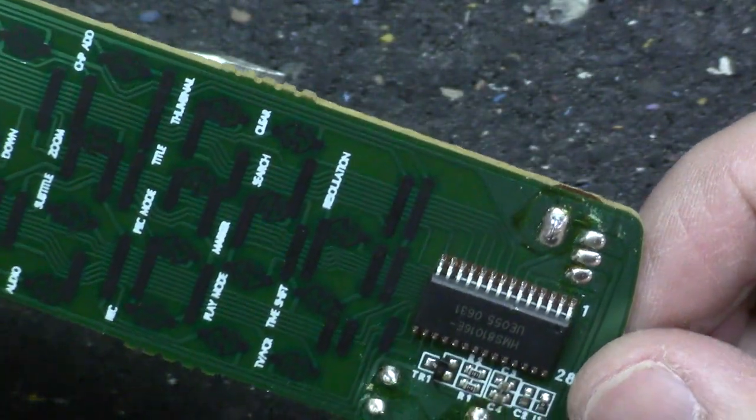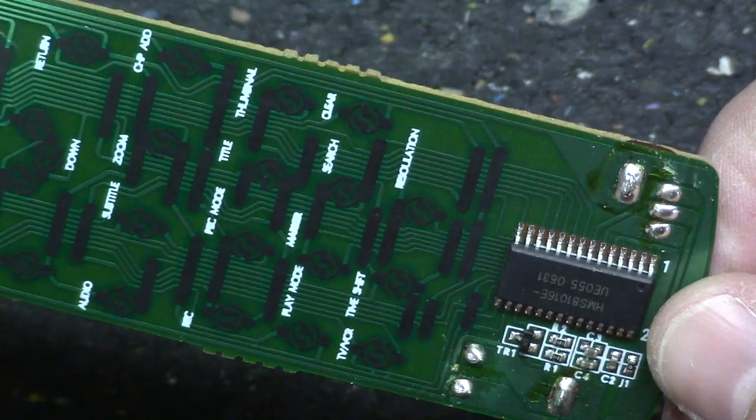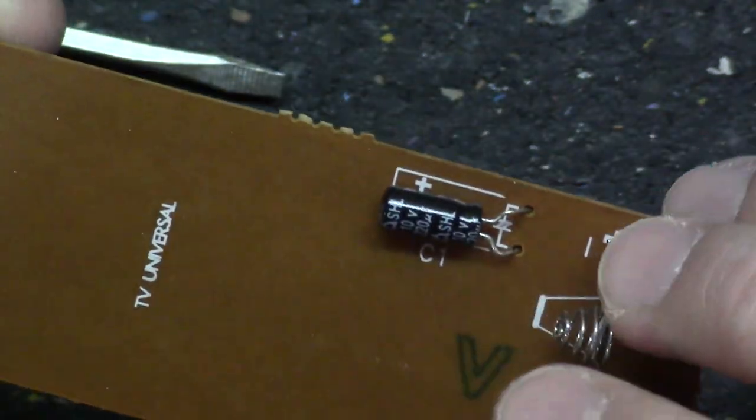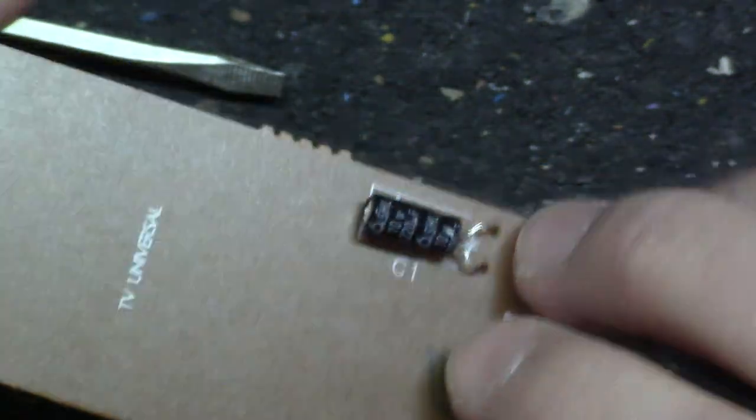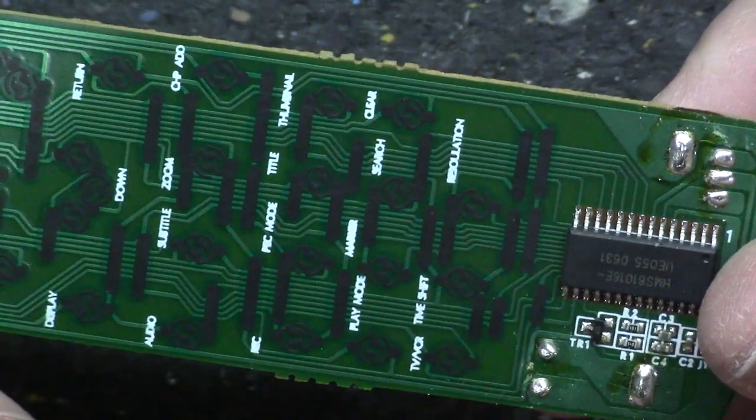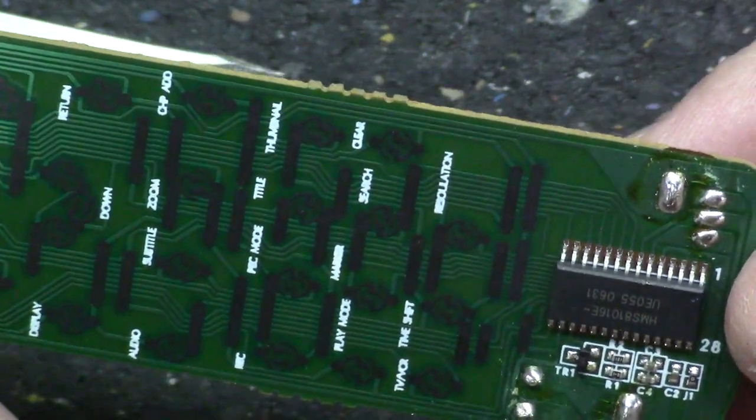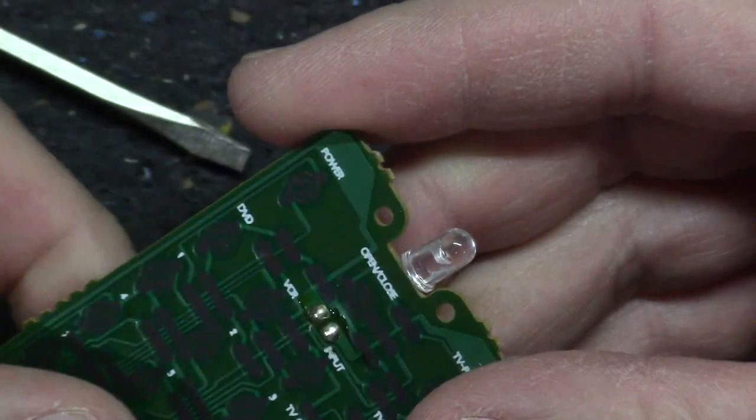If everything looks normal, then look really close at the larger solder joints. If you see a little hairline crack in it, then that's a definite clue that the solder joint has loosened and you need to touch that up.